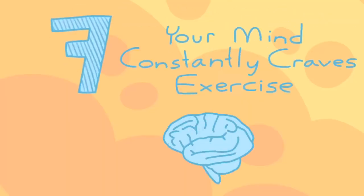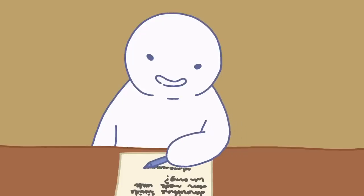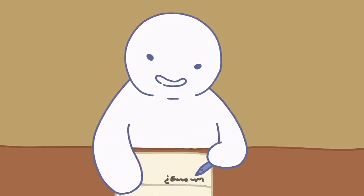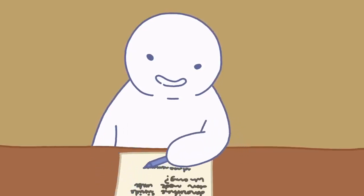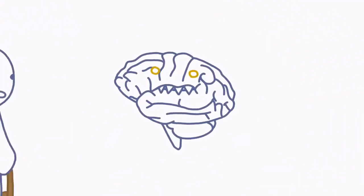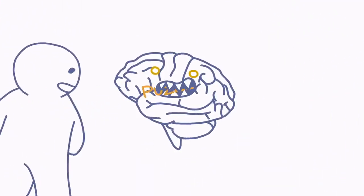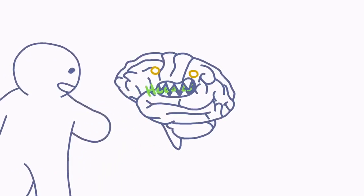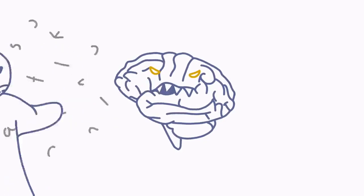Seven, your mind constantly craves exercise. Being a highly intelligent person means you enjoy and need constant intellectual stimulation. In short, your mind has the munchies. You always want to do something that engages your brain skills, dips you in a new discovery, or lets you stretch your thinking muscles.